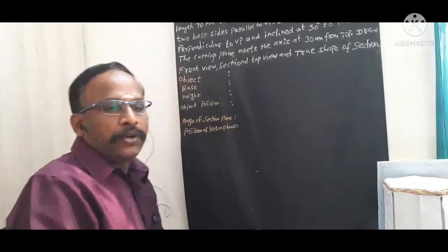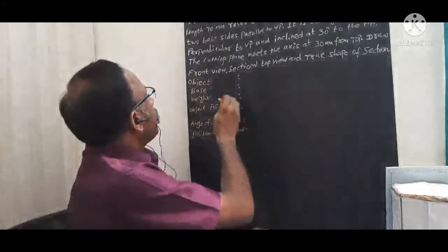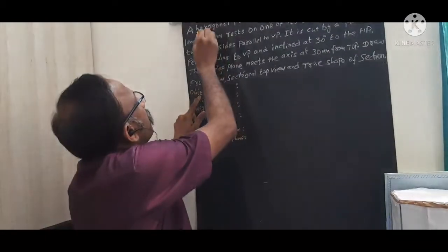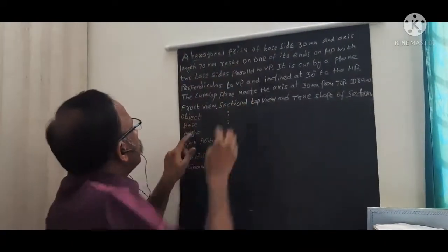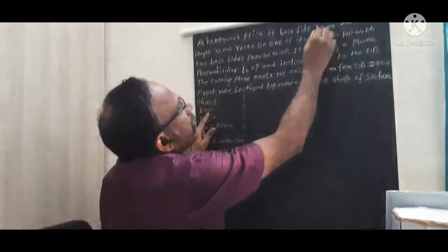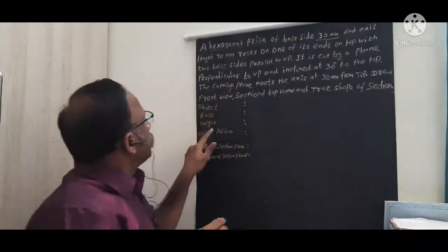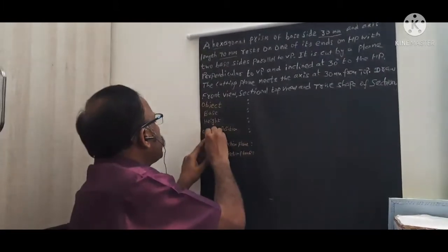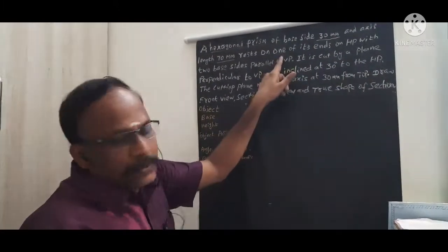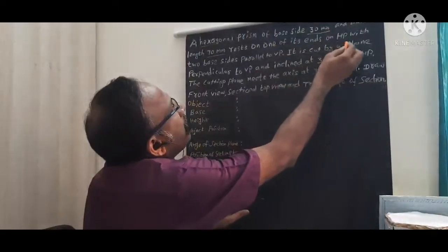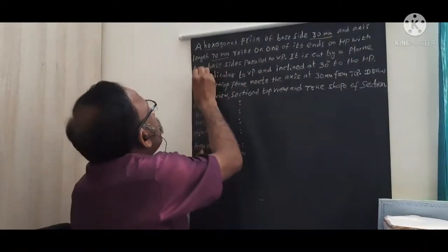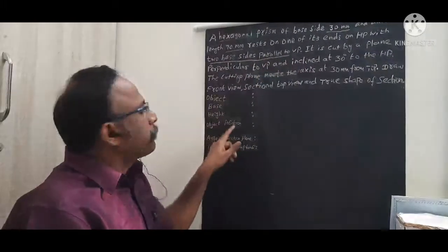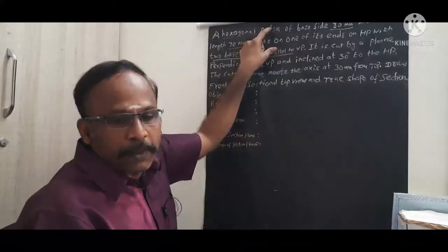We need to understand the problem. First, identify the object: hexagonal prism. Base side is 30 mm, height is 70 mm. The object position — the first position of the solid — is resting on one of its ends on HP with two base sides parallel to VP. This is the object position from the first part of the problem statement.